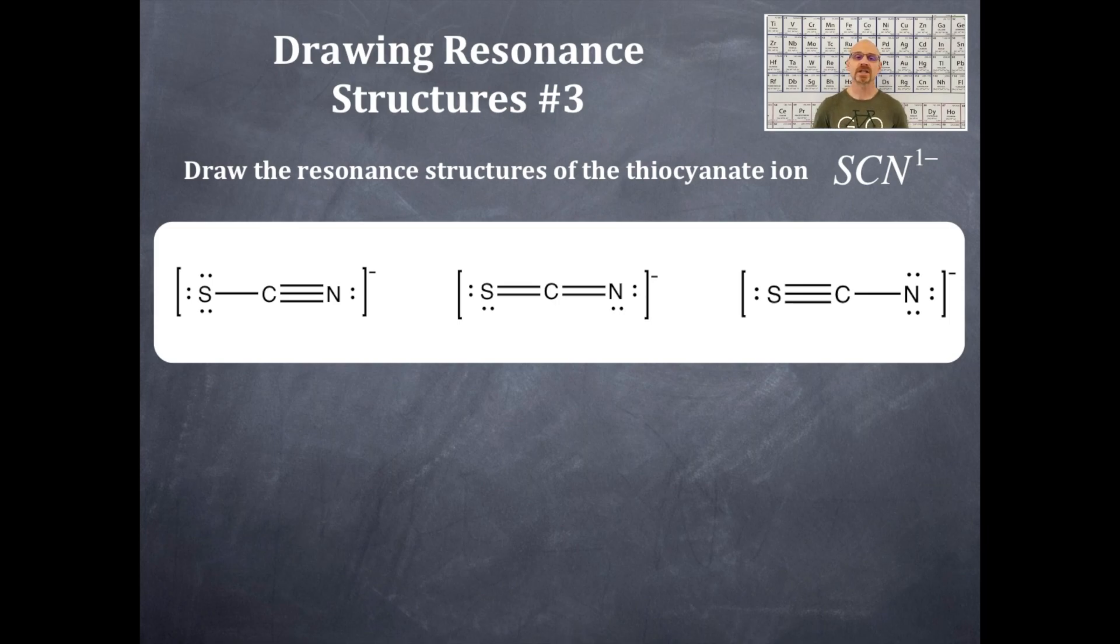Of course, you have to have arrows in between these to denote that these are resonance structures. All three of these are resonance structures. Not one of them is the best one, in this case, at this moment in time. They are all equivalent for us at this moment in time.